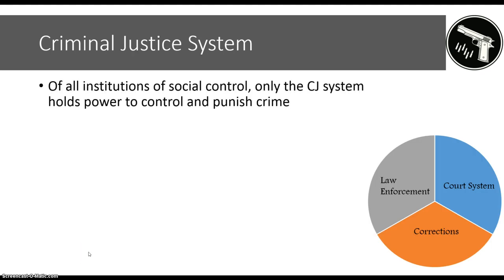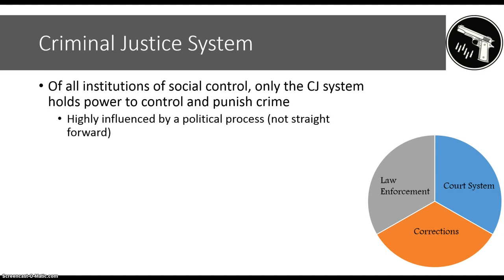The criminal justice system is part of this political process. Of all institutions of social control, only the criminal justice system holds the power to control and punish crime. It is highly influenced by a political process and is not a straightforward endeavor — there is no one definition of crime that gets applied to everybody equally. The system is made up of three parts: law enforcement, the court system, and corrections, all of which take part in the political process of defining and applying the law.